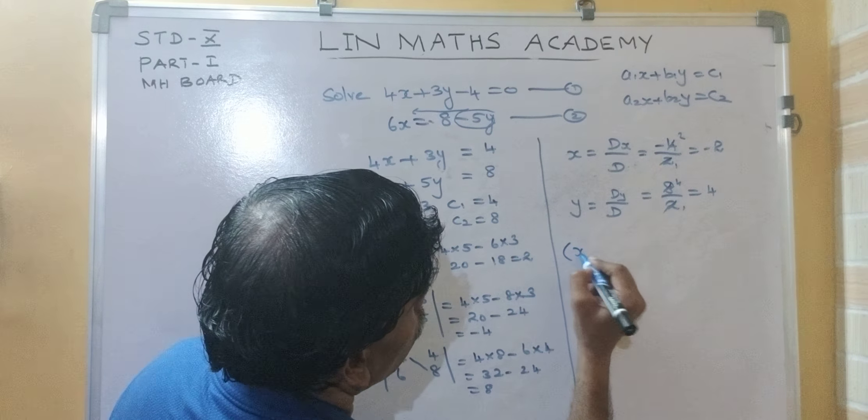Solve 4m plus 6n equal to 54. 3m plus 2n is equal to 28. Yes, it is of the standard form. See, a1x plus b1y equal to c1. A2x plus b2y equal to c2. It is of the standard form. Very nice.